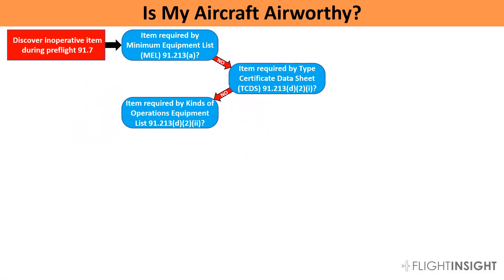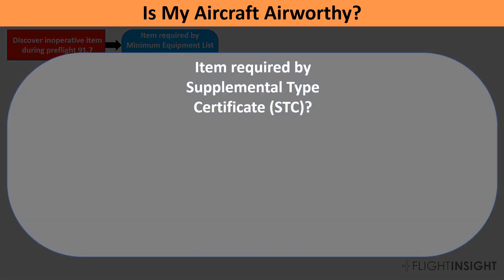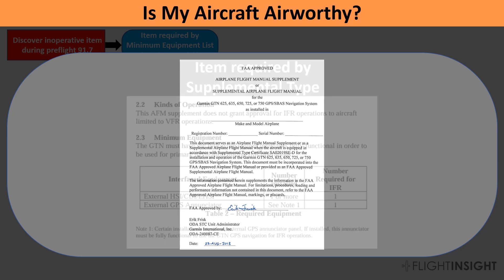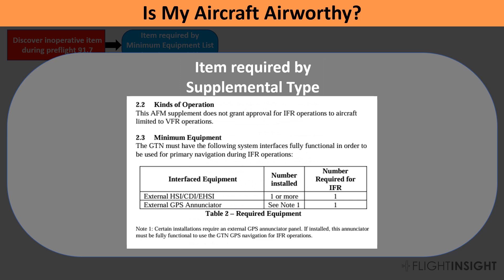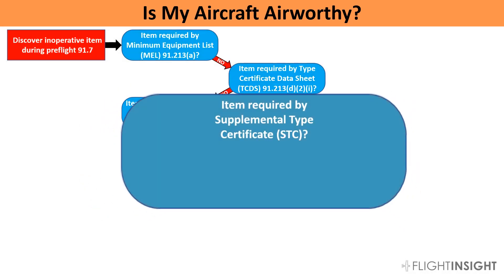If, after having gone through the KOEL, we don't find that the item is required, we can move on to any supplemental type certificate, or STC, that might require it. An STC is issued for new equipment or instruments installed in the aircraft that weren't covered in the initial type certification. These can be found on the FAA's site, but you should reference the STC you actually have with your aircraft. This STC is for some Garmin GTN GPS units such as the GTN 750. Just like some aircraft, the GTN has a kinds of operations equipment list. This one says that if you're using the GTN for primary navigation in IFR operations, you must have an external HSI, CDI, or EHSI — like the VOR head paired to the GPS. If that's not working, you can't go up IFR relying primarily on the GPS.